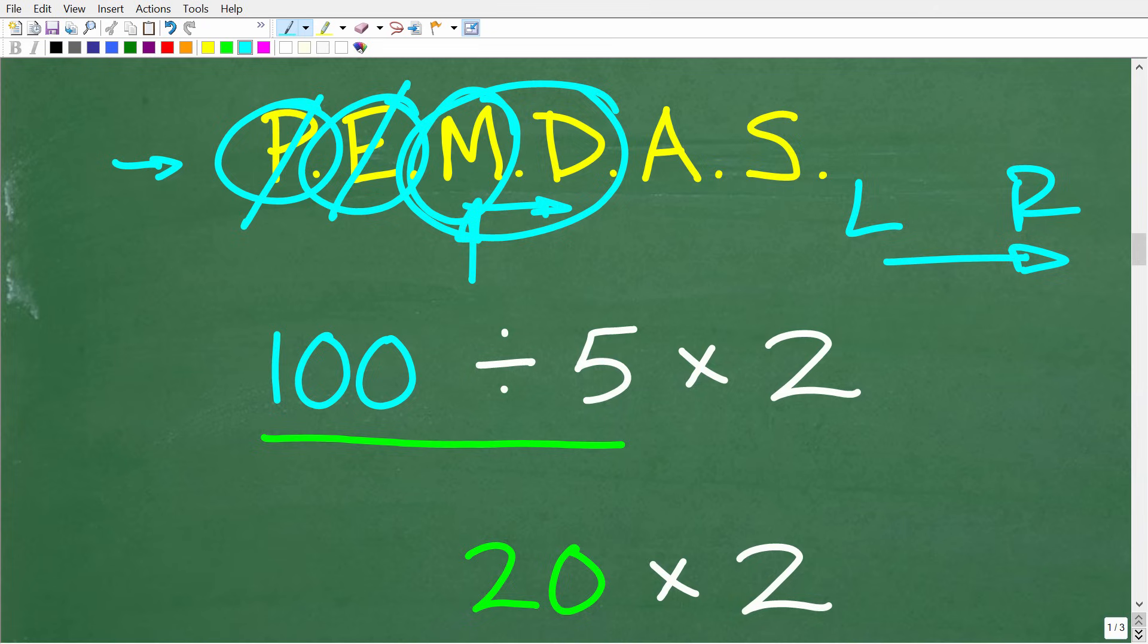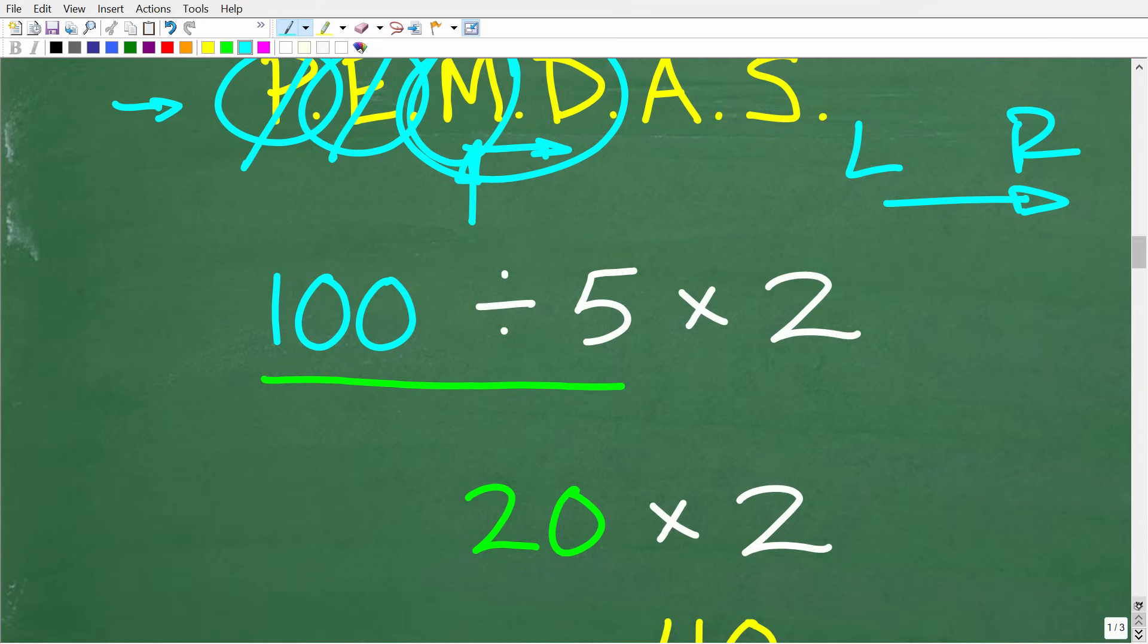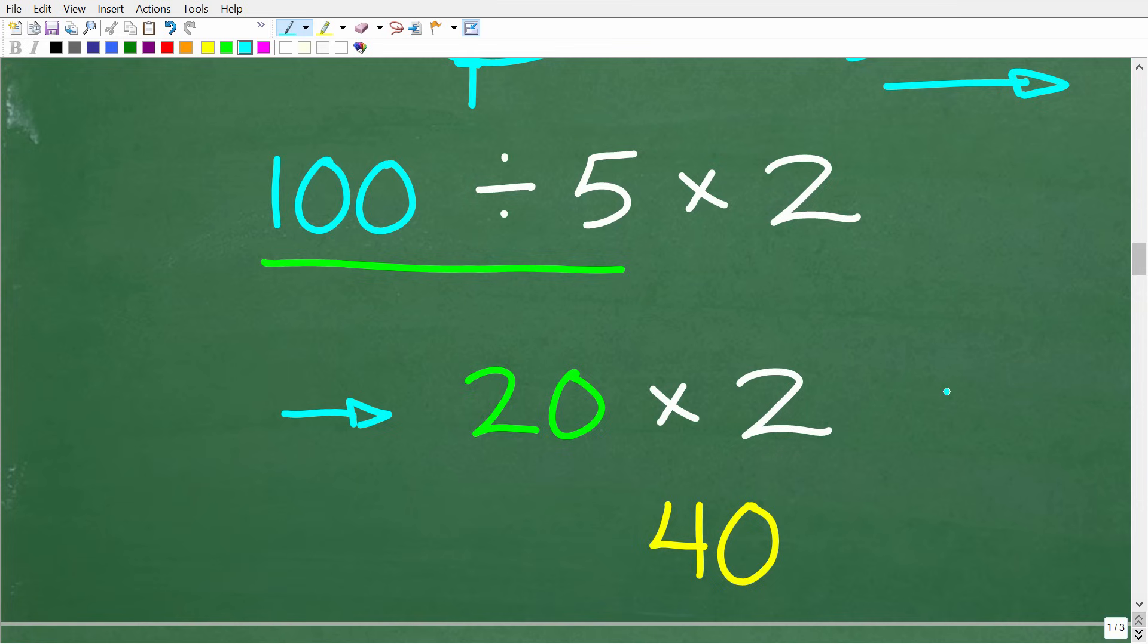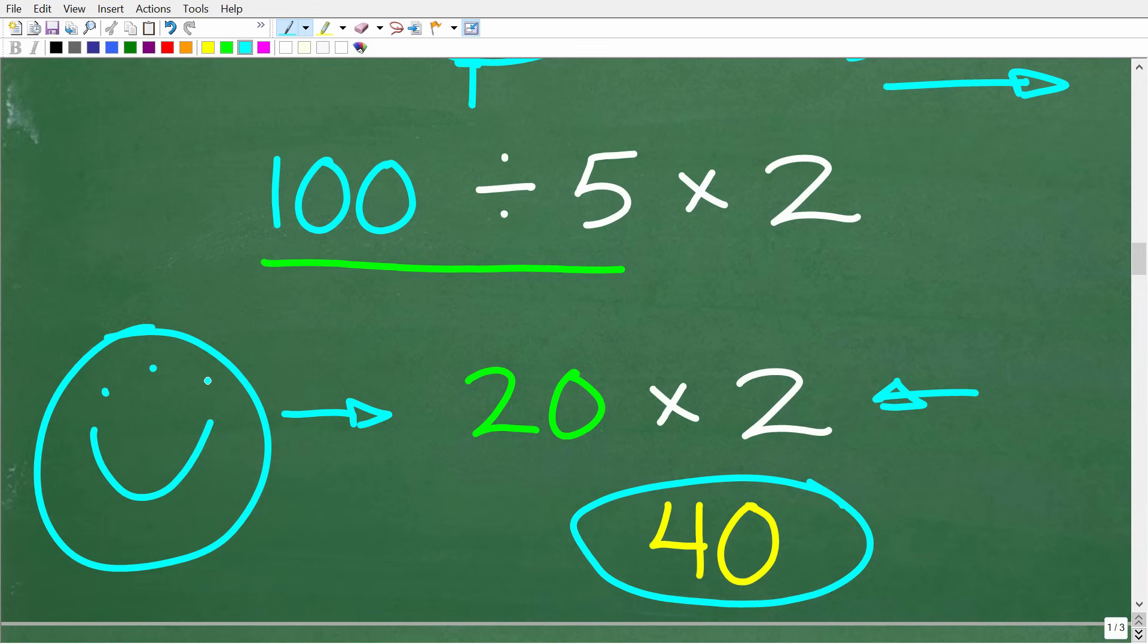All right, so 100 divided by 5 is what? Well, that's simple arithmetic. That's 20. And then, of course, the last thing to do is this remaining multiplication. So 20 times 2 is 40. All right, so that is the correct answer. So how did you do? Well, hopefully you got this right, but definitely don't feel bad about getting this wrong. Matter of fact, I would feel pretty good about getting this wrong. Because this is a very common error. And now that you understand the order of operations, you'll never make this mistake again.